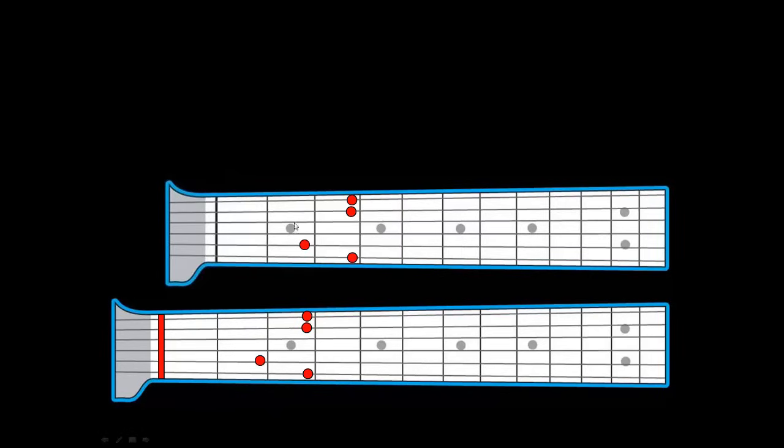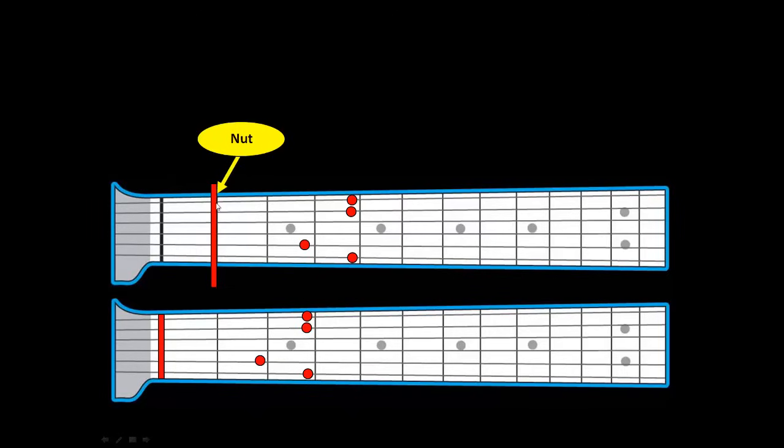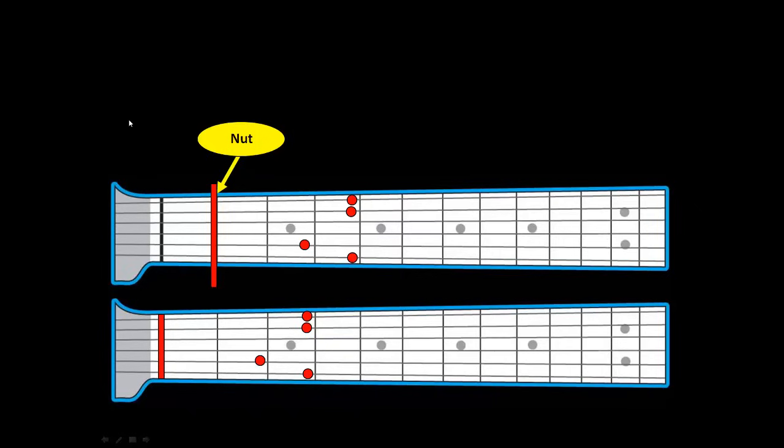Before I go to an example, I forgot to put this in there. So essentially what a capo is doing is it's shortening the neck of your guitar. So remember capo is there. Basically I'm cutting this part of the guitar off. Nothing. None of these strings are going to ring anymore. So it's essentially like shortening the neck on the guitar.